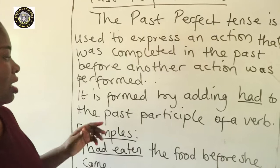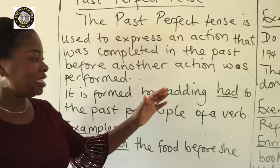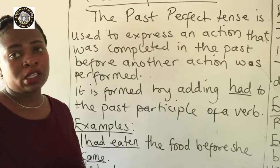It is formed by adding 'had' to the past participle of a verb. We form the past perfect tense by adding 'had' to the past participle of a verb. We all know what the past participle of a verb is.